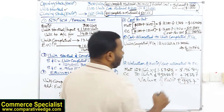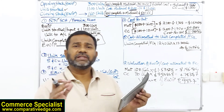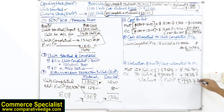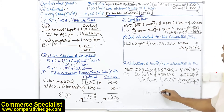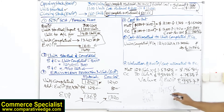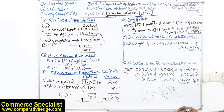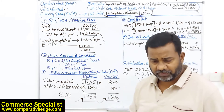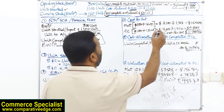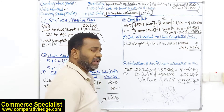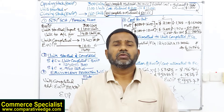To verify the workings: add the value of finished goods ($14,115.6) and ending WIP ($983.7), which totals approximately $15,100. Checking the input costs — opening WIP costs plus current period costs also sum to $15,100. This confirms that the workings are accurate and complete.